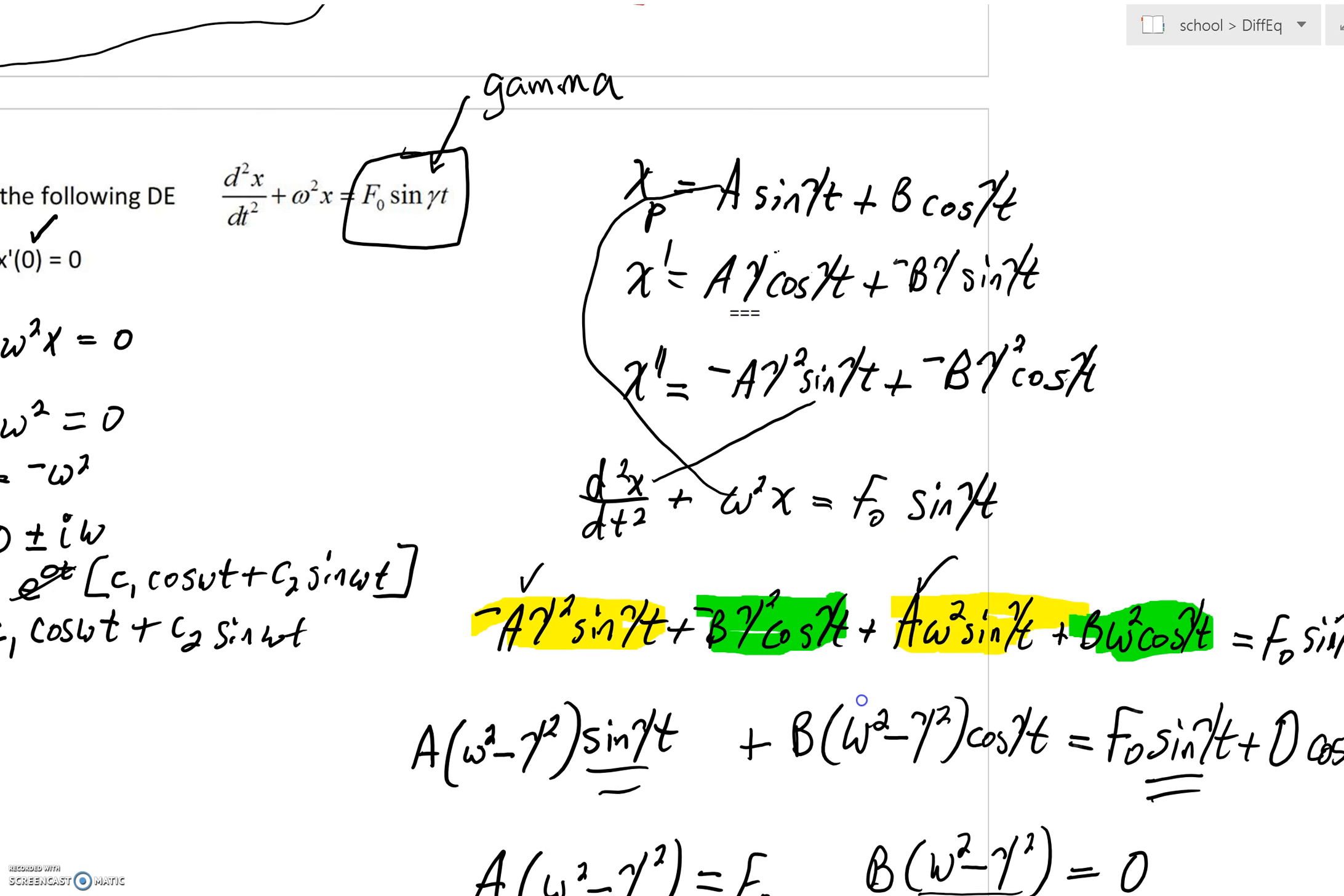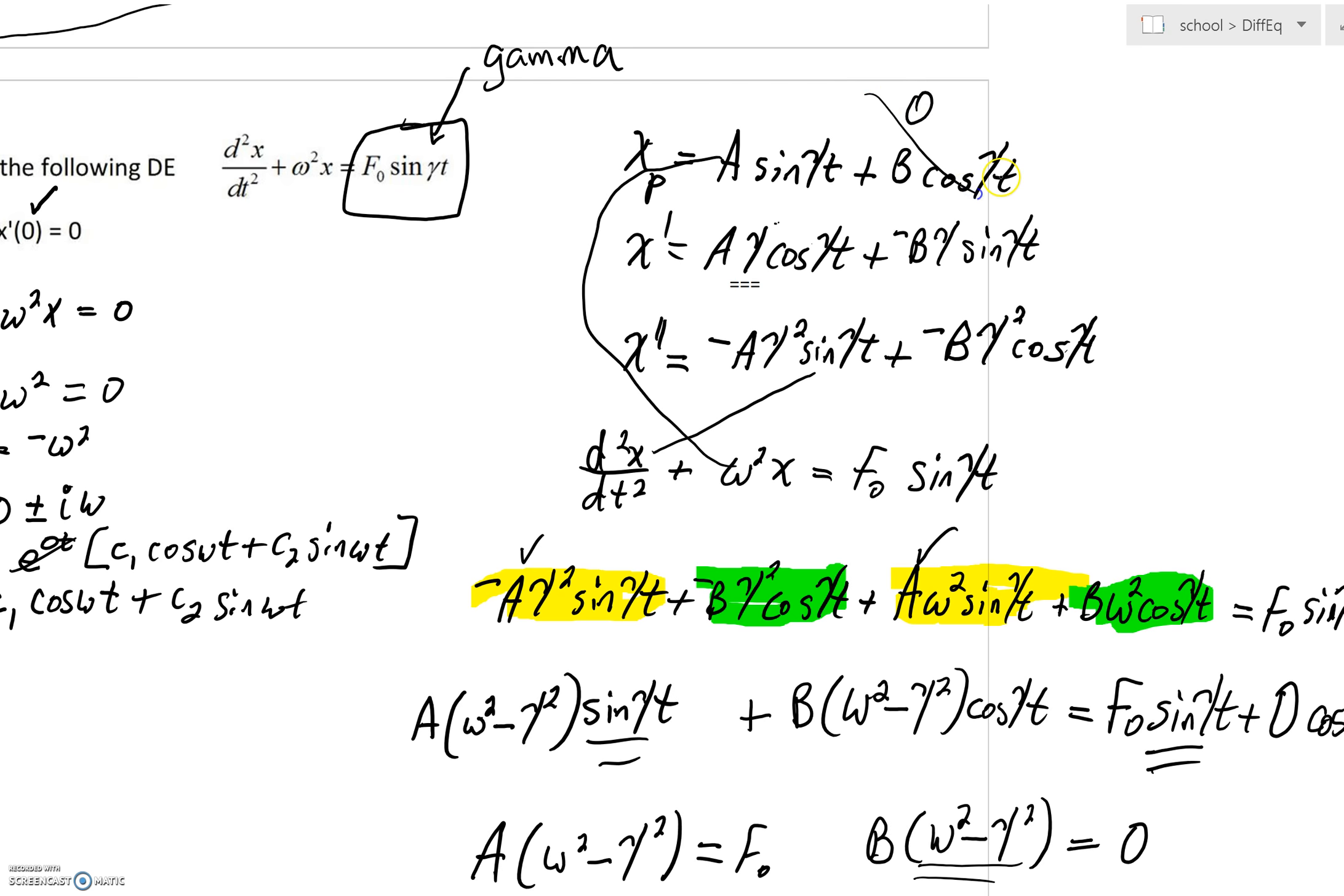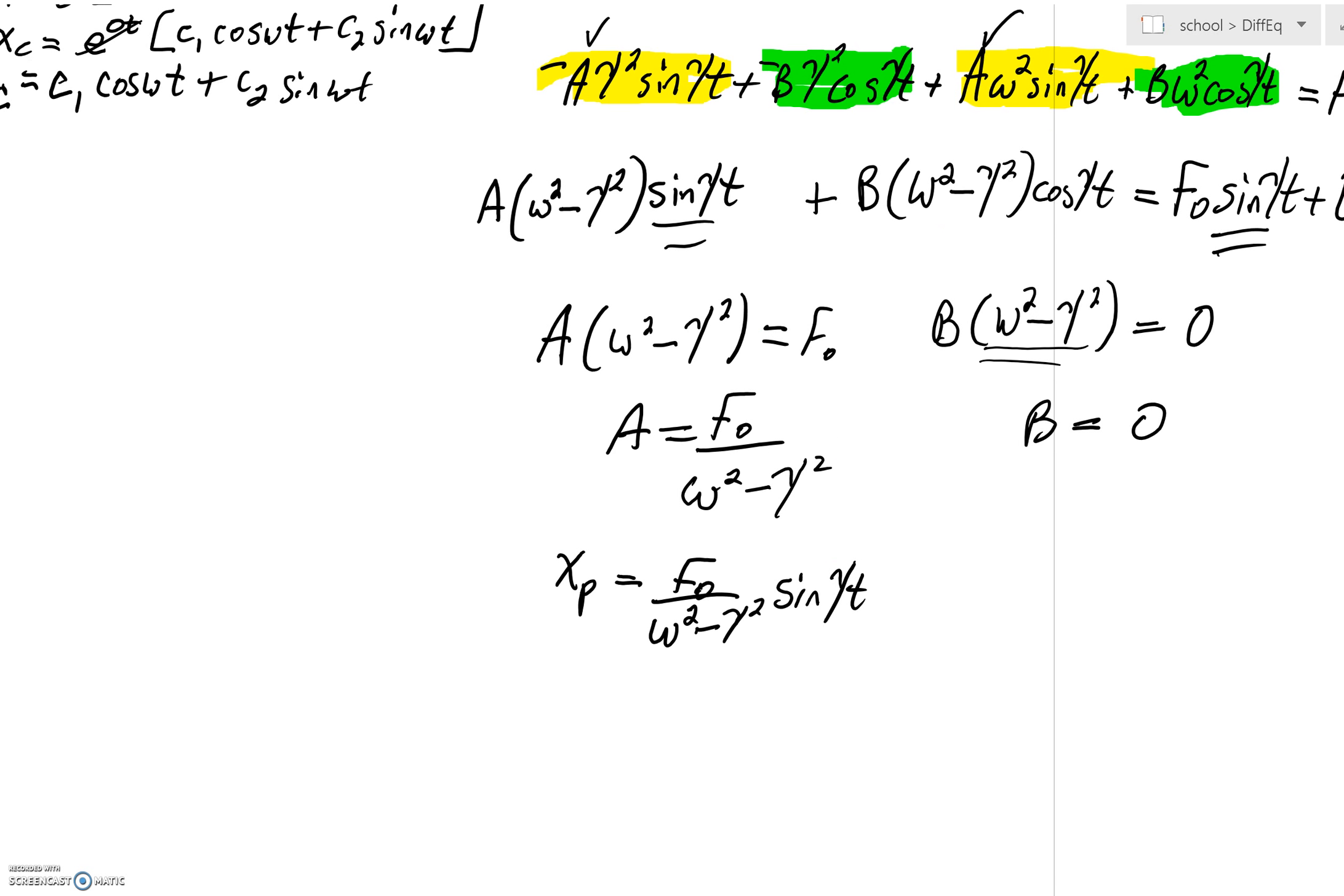sin(γt). And you can see if our B is zero, that's just going to wipe that all out. So that's going to be our particular solution.